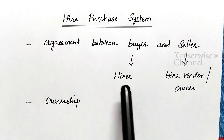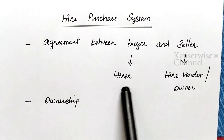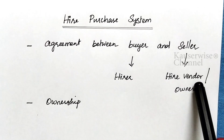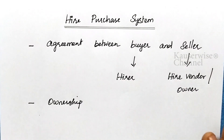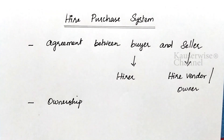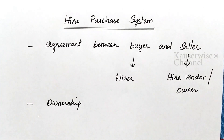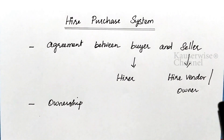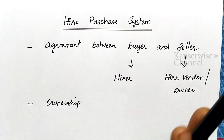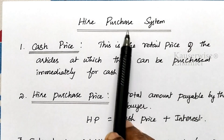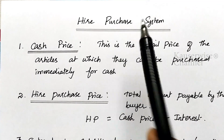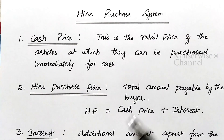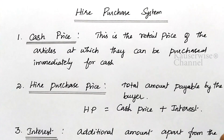It is an agreement between the hirer and hire vendor. Hirer means buyer; hire vendor means seller. Now we are going to see the problem, but before that, let us see some important terminology which is very important for this particular accounting treatment. According to hire purchase system, we need to understand some important terms.